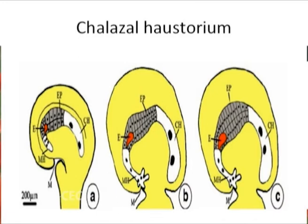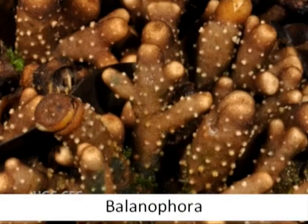The chalazal haustorium is found in plants of the family Araceae and Nymphaceae. The first division of the endosperm mother cell forms a chalazal cell and a micropylar cell. The chalazal cell does not divide further but instead forms a haustorium, as in the plant Balanophora.